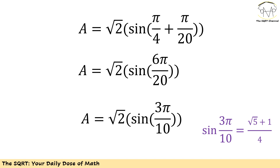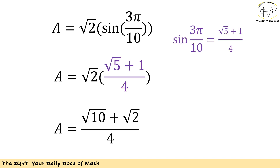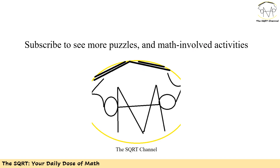Now remember what we had from the problem — we are given sine of 3π over 10 already. We know it equals (√5 + 1) over 4. So I'm going to replace sine(3π/10) with (√5 + 1)/4 and multiply by √2 to find the final answer: (√10 + √2) over 4.